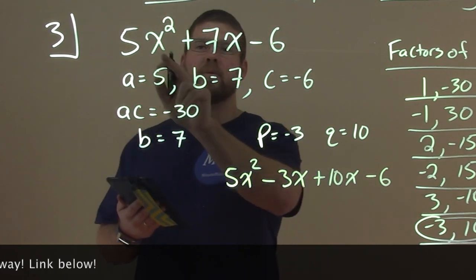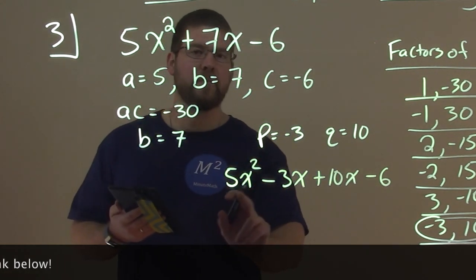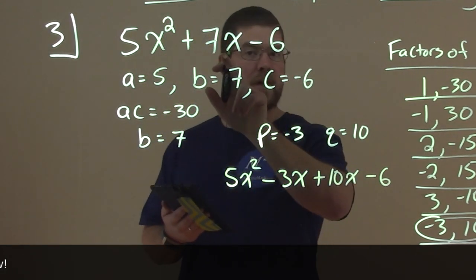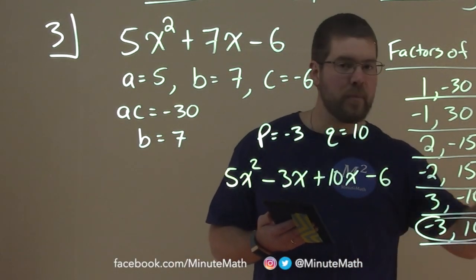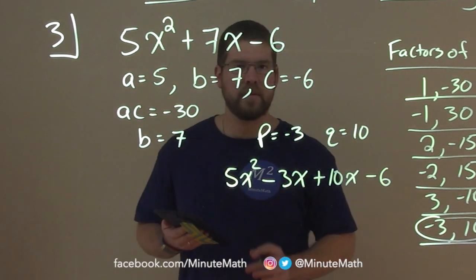This is the same expression as we were given from the beginning. 5x². We have negative 3x plus 10x, 7x. And negative 6 still comes here. And this table helped us set up this expression.